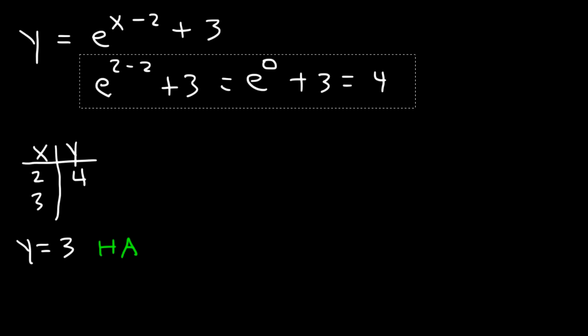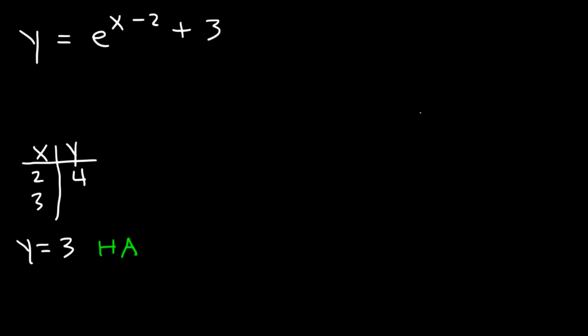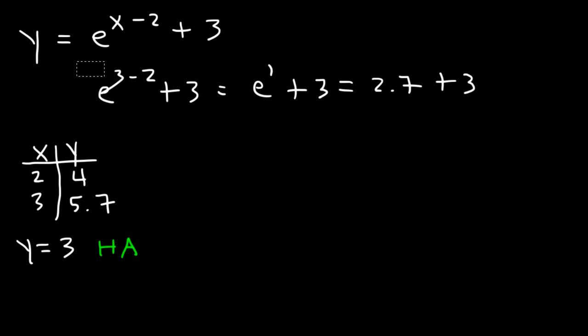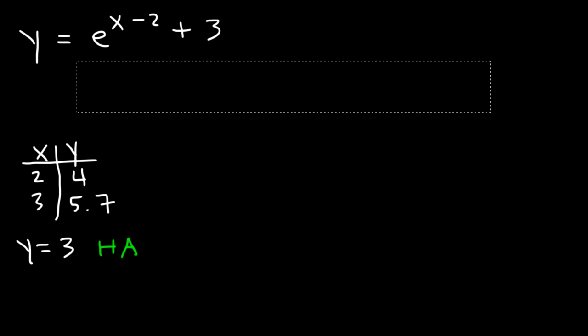Now, what about when x is equal to 3? What is the value of y? So 3 minus 2 is 1. e to the 1 is just e. And e is about 2.718. But let's round it and say it's 2.7. 2.7 plus 3 is about 5.7. And now we have enough information to make the graph.